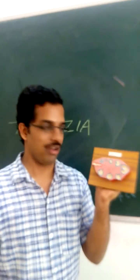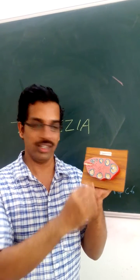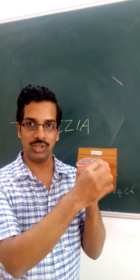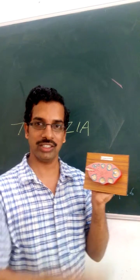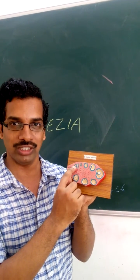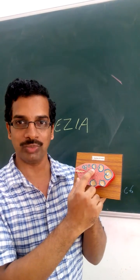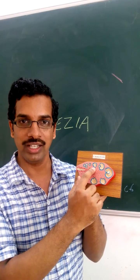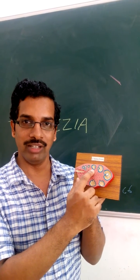This is a section of the ovary. It has got cortex and medulla. In the cortex we are able to see the primordial follicles — the small ones — and the bigger ones are primary follicles.